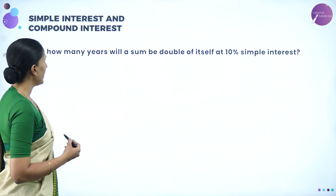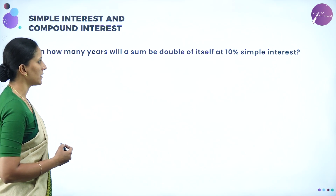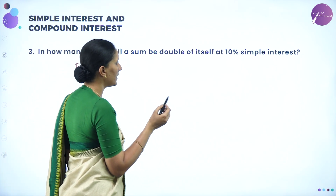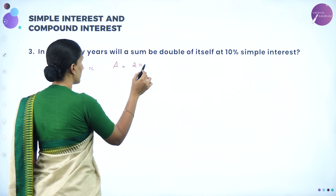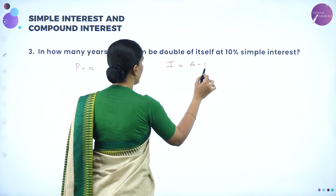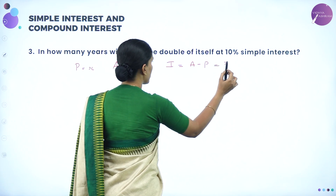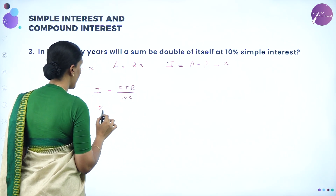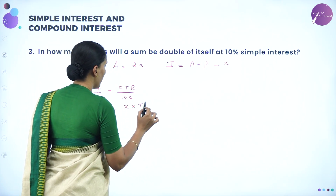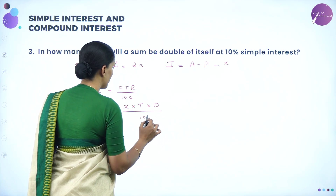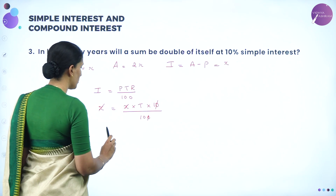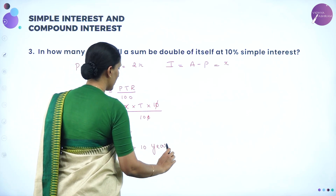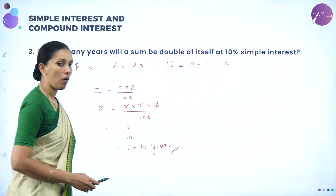Next question: in how many years will a sum be double of itself at 10% simple interest? Let the principle be X. If the amount is 2X, then interest = amount minus principle = 2X minus X = X. Using I = PTR/100: X = X × T × 10 / 100. X cancels, giving 1 = T/10, so T = 10 years. After 10 years, the amount invested will be doubled.